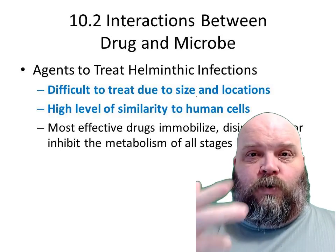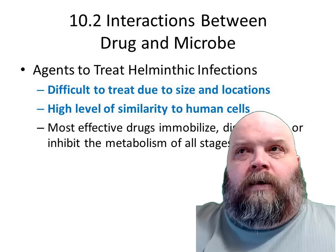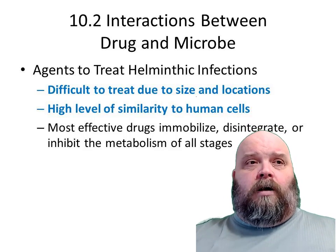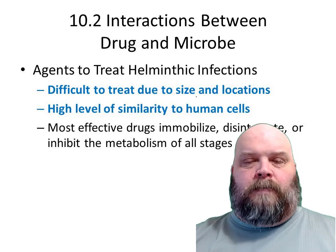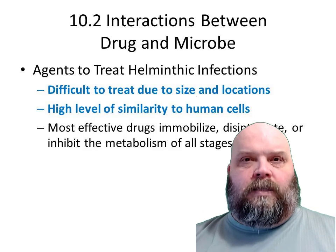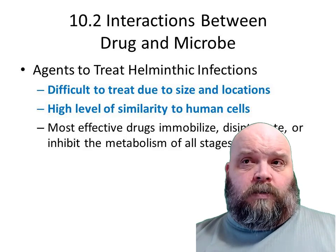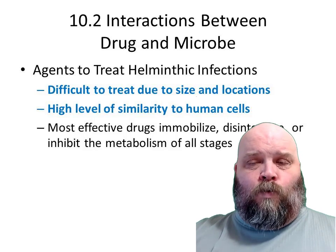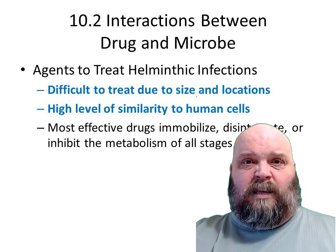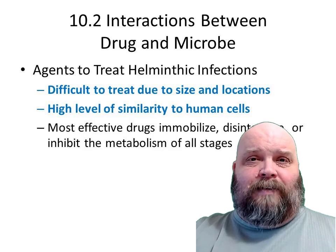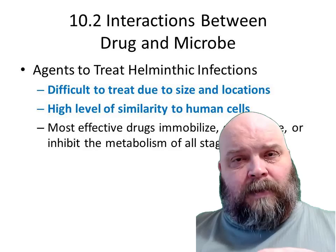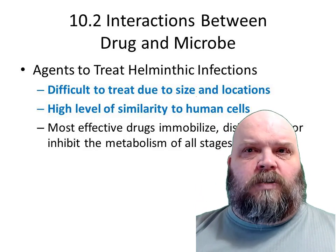When treating helminths, it's going to be difficult. Helminth infections — the tapeworm can be throughout your large and small intestine. These things can be 2, 3, 5, 10 meters in length. Or it could be flukes that have swum up the bile duct and are now lodged in different lobes of the liver. You can use drugs that will kill them, but you'll have a dead decaying fluke in the liver causing tissue damage. The size and location of helminths will cause problems.